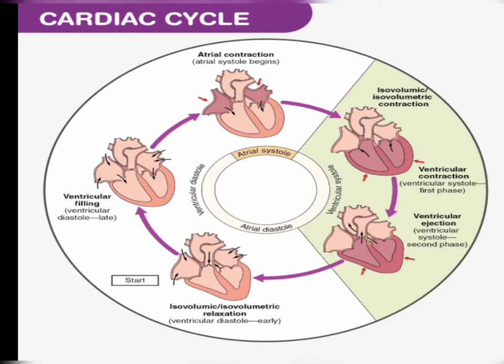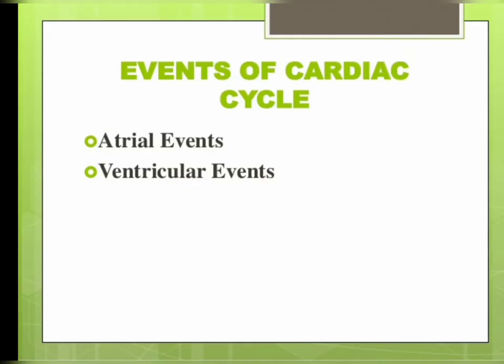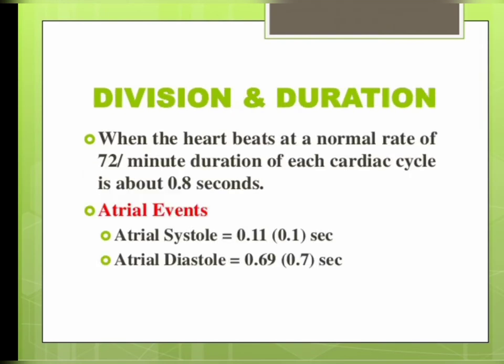The next is ventricular filling, the ventricular diastole late phase. In this phase the two atria begin to contract and each atrium pumps blood into the ventricle below it. This completes the cardiac cycle. The two major events of the cardiac cycle are arterial events and ventricular events. The normal heart rate is 72 beats per minute.